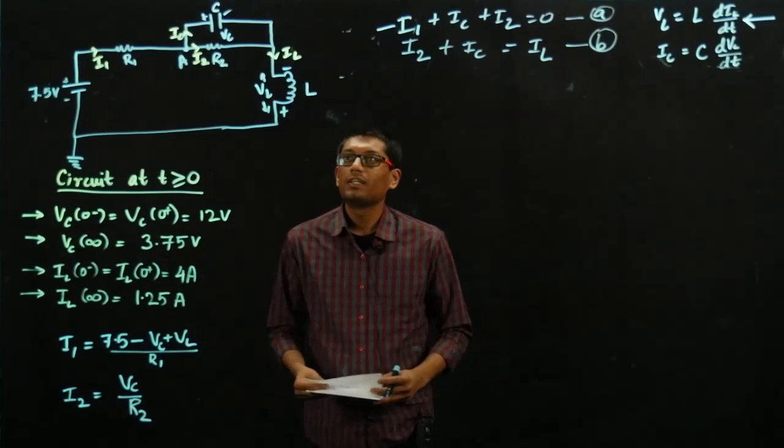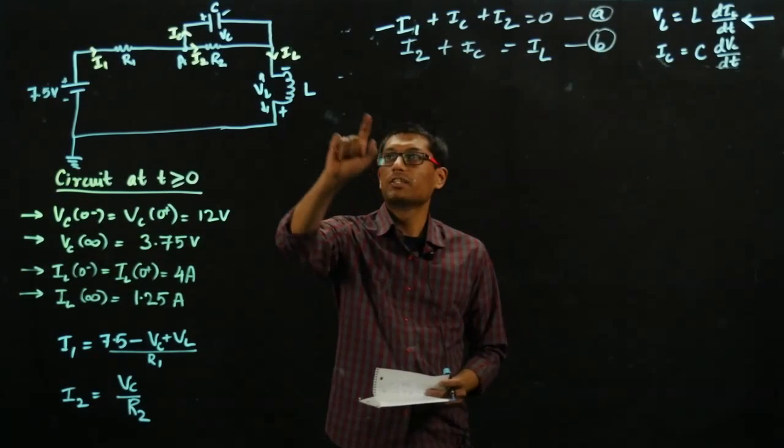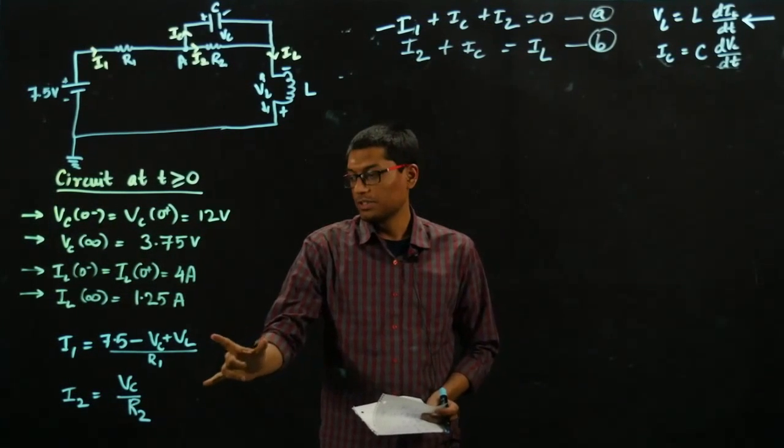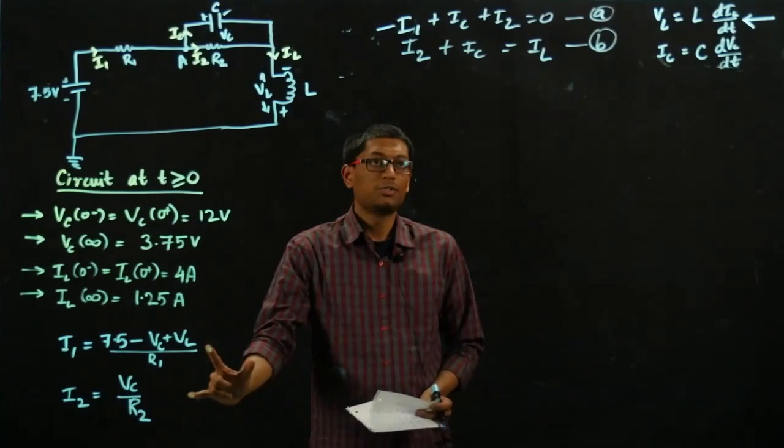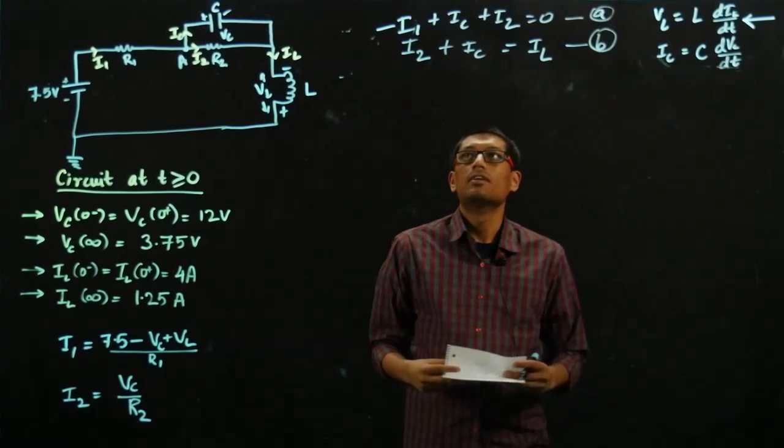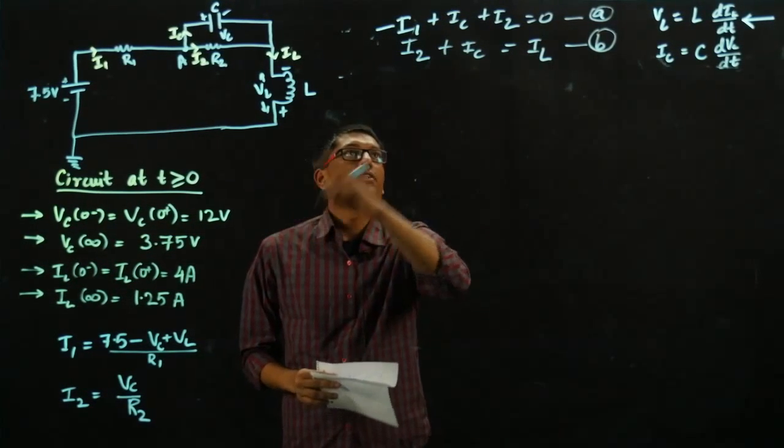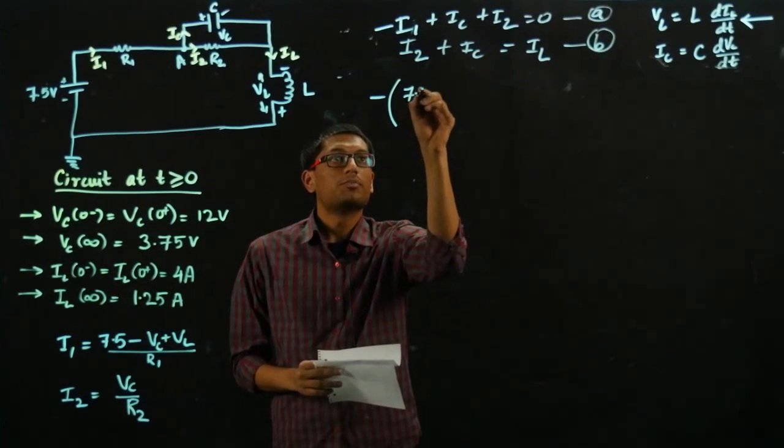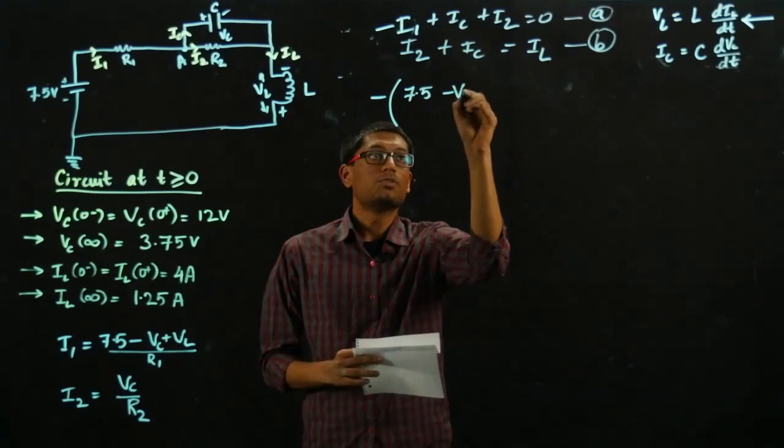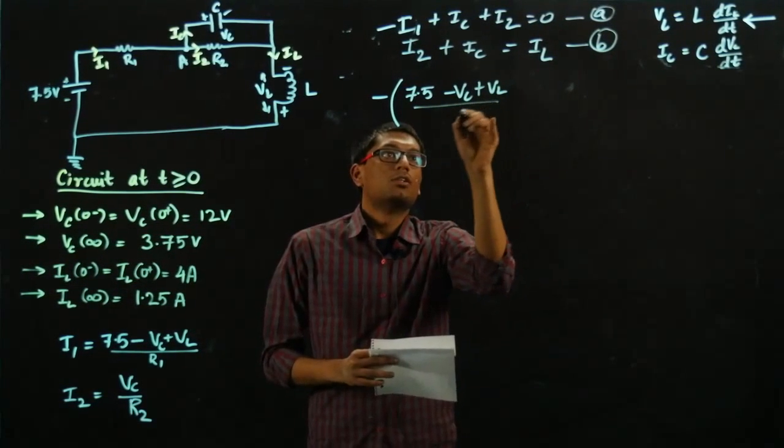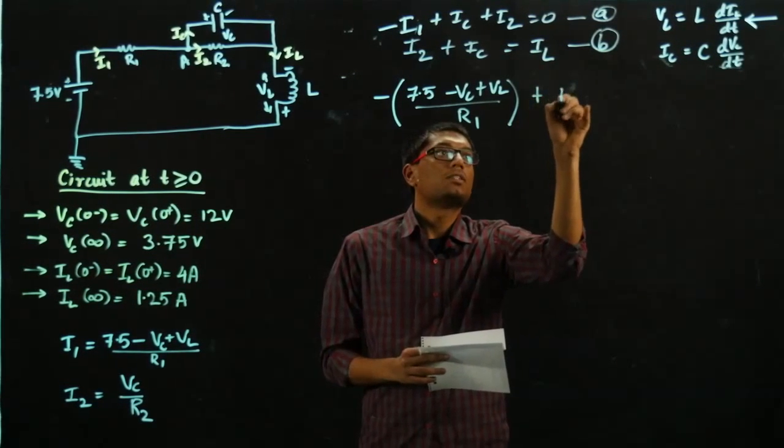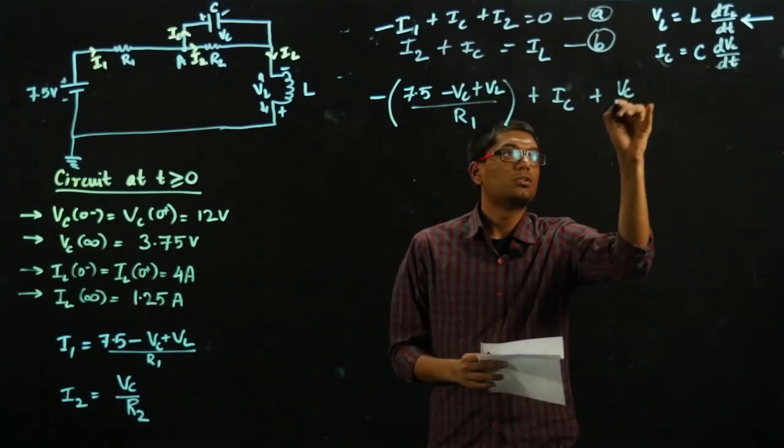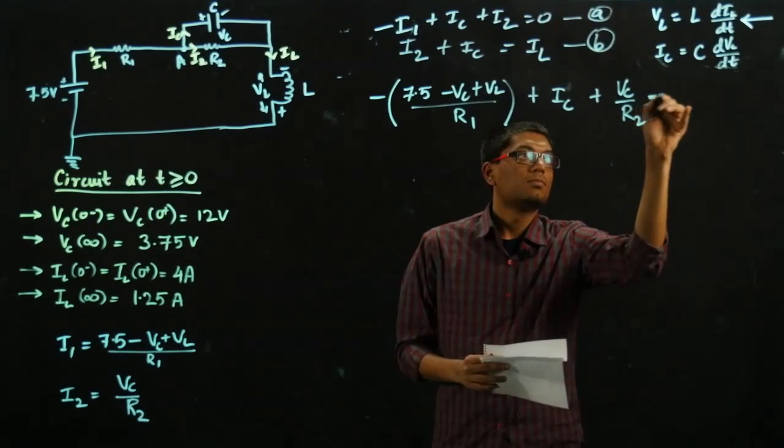So we finally need a differential equation either in terms of IL or VC. So what we can do is substitute the values of these I1 and I2 expressions that we found out in equation number A. So if I plug those values in, we find it would be minus of 7.5 minus VC plus VL over R1 plus IC and I2 is nothing but VC over R2 equals 0.